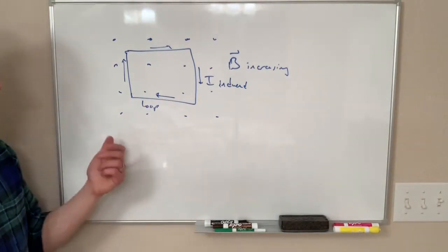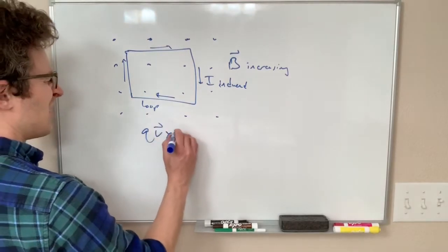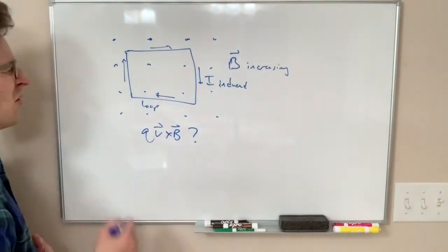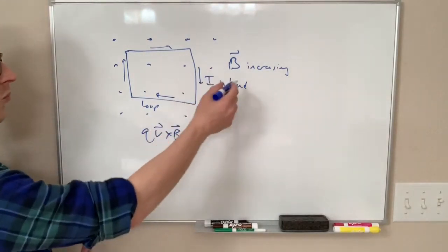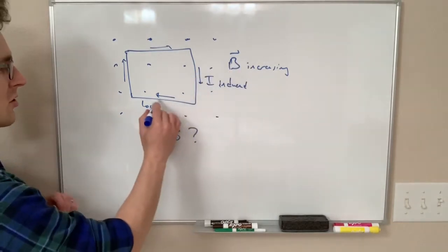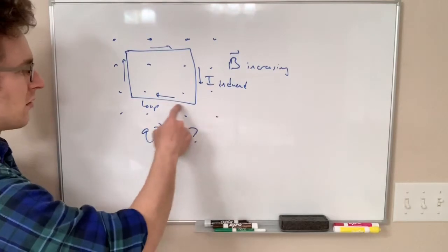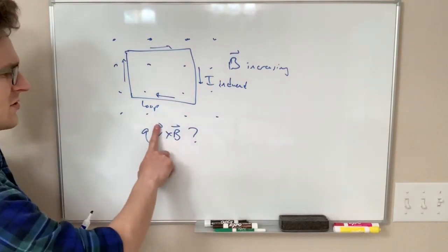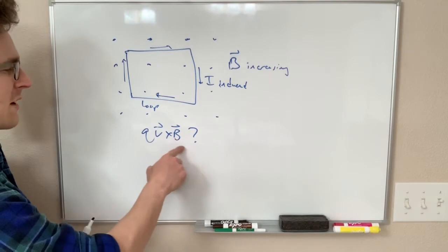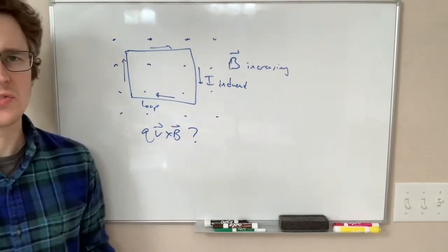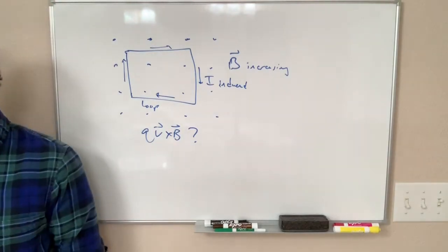And clearly we cannot explain this with QB cross B, right? Our charges here, while they're sitting in the magnetic field, the charges here are stationary. And it's only when we change the magnetic field strength that makes them move, and if V is zero, it doesn't matter if B changes in this equation, the force is still zero. So what is happening? What is happening there?